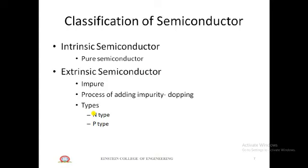Semiconductors are classified into two types: intrinsic and extrinsic. Intrinsic semiconductor is a pure form of semiconductor. At room temperature, valence electrons gain energy and jump to the conduction band. Extrinsic semiconductor is an impure form — some impurity is added to the pure semiconductor. This process is called doping, and the doped semiconductor is called an extrinsic semiconductor.